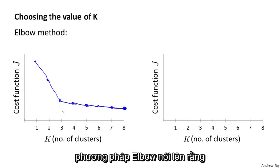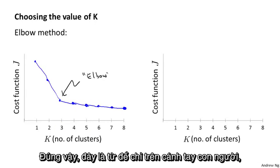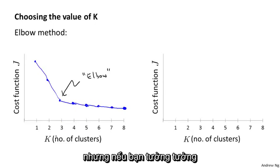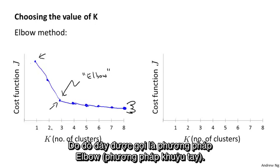And if you look at this curve, what the elbow method does is says, well, let's look at this plot. Looks like there's a clear elbow there, right? This is maybe by analogy to the human arm where, if you imagine that you reach out to your arm, then this is your shoulder joint, this is your elbow joint, and I guess your hand is at the end over here. And so this is the elbow method.